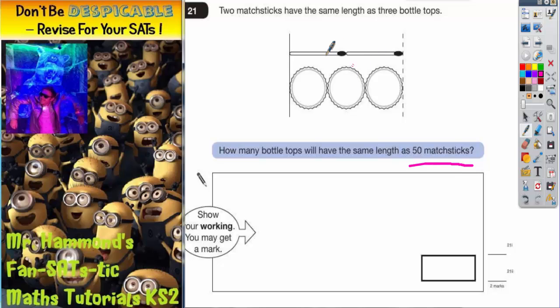What we're essentially doing is we've got two matchsticks and we're trying to get to 50 matchsticks. So we're actually multiplying this diagram here of two matchsticks by 25. If you take your two matchsticks and get 25 lots of that, you will get 50 matchsticks.